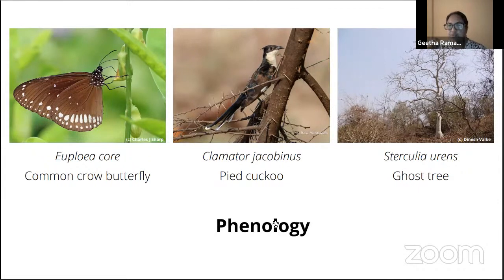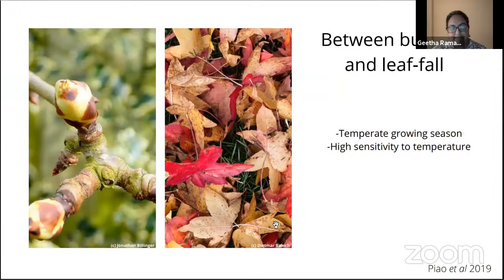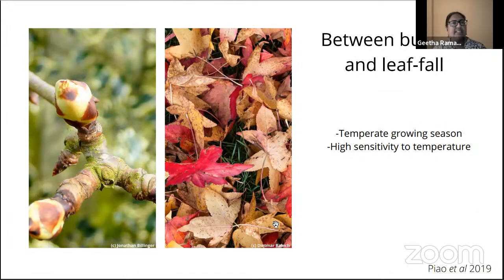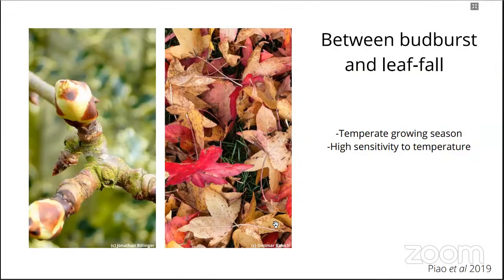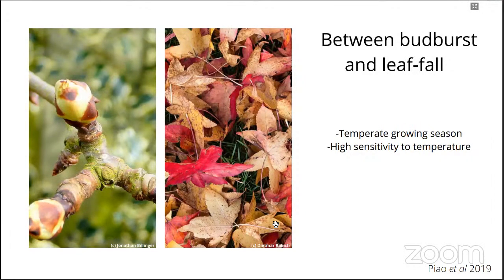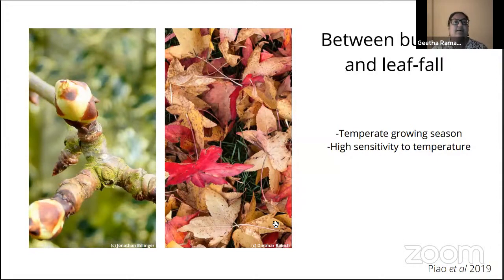To explain this idea a bit more, let's go to the temperate latitudes. Plants there have a growing season — when it is warm enough for metabolism — during which they put out new leaves, grow, flower, fruit, and reproduce. During fall, when temperatures drop and conditions become less conducive for metabolism, trees shed their leaves and remain leafless throughout winter. In temperate regions, even slight changes in annual temperatures or the onset of a season can trigger these phenological events very dramatically.